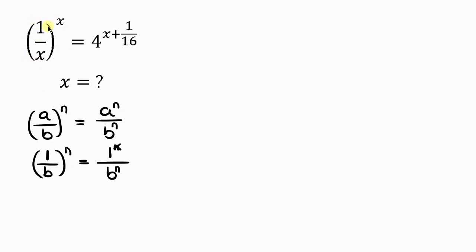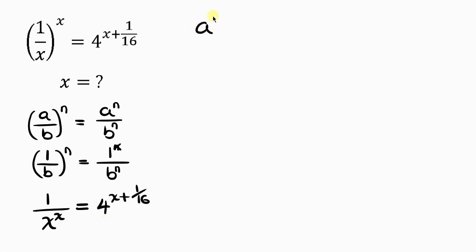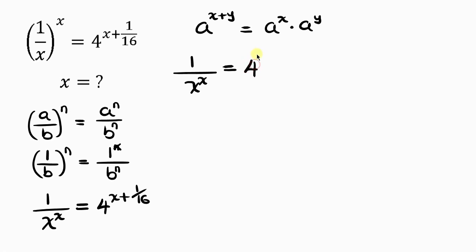Applying this, the left hand side becomes 1 over x^x. On the right hand side, we apply the law a^(x+y) = a^x · a^y, so 4^(x+1) becomes 4^x times 4^1, giving us 1 over x^x equal to 4^x times 4^1 all over 16.